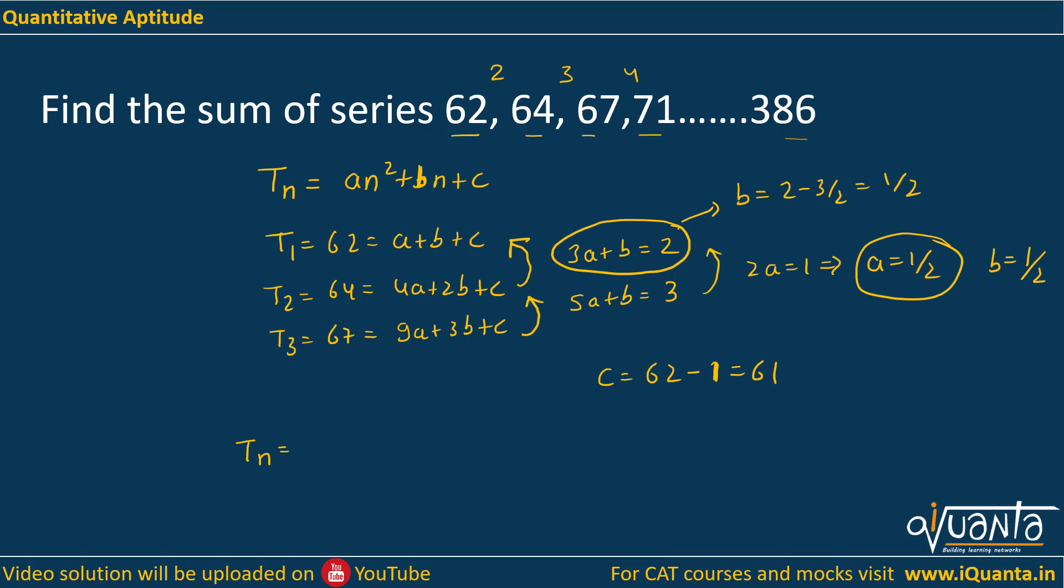Now we have the general term TN. It will be N square by 2 plus N by 2 plus 61. Since we do not know which term of this series will be 386, for that we will put this term equal to 386 and try to find out the value of N.